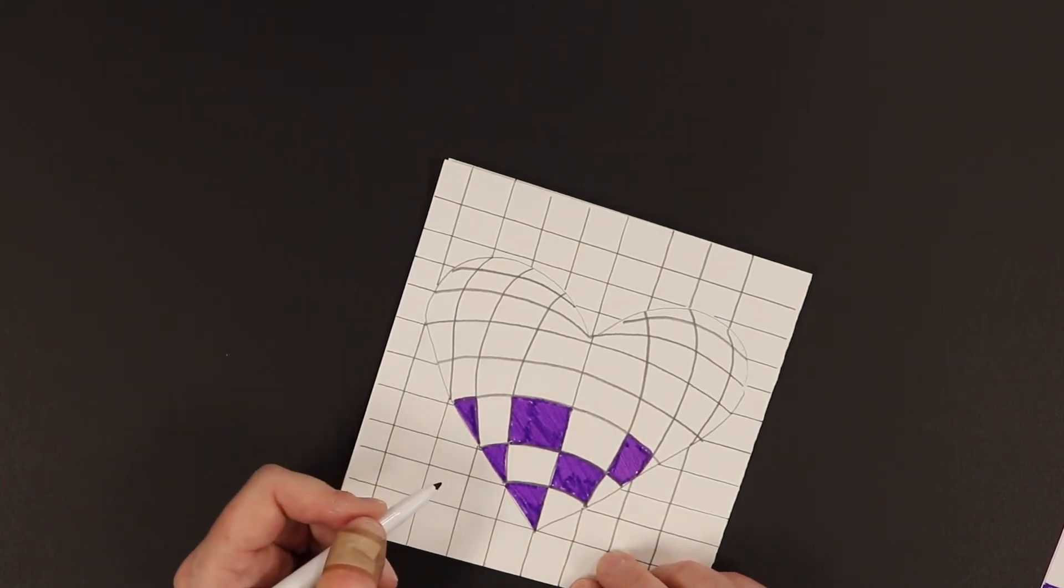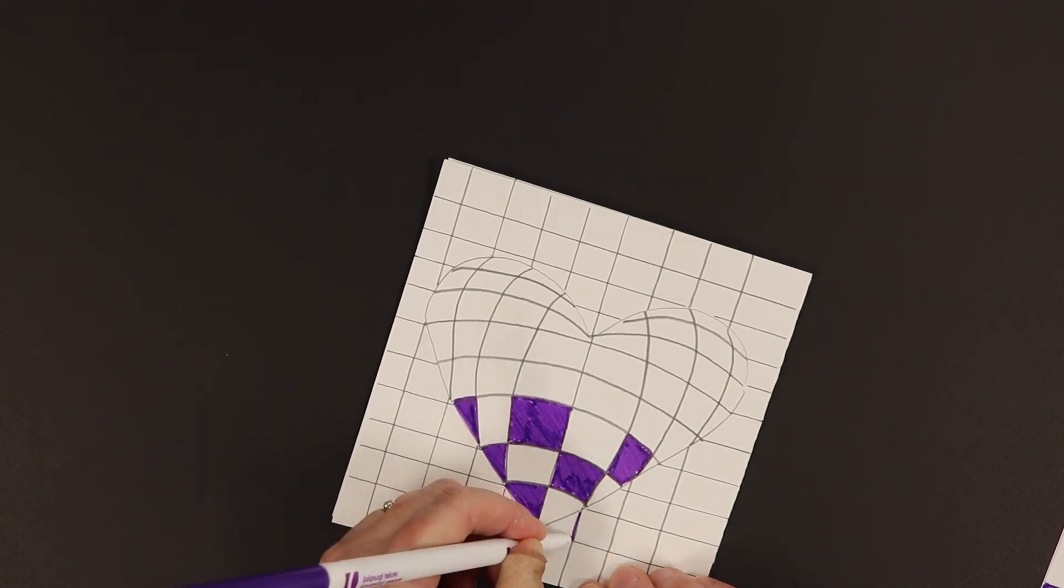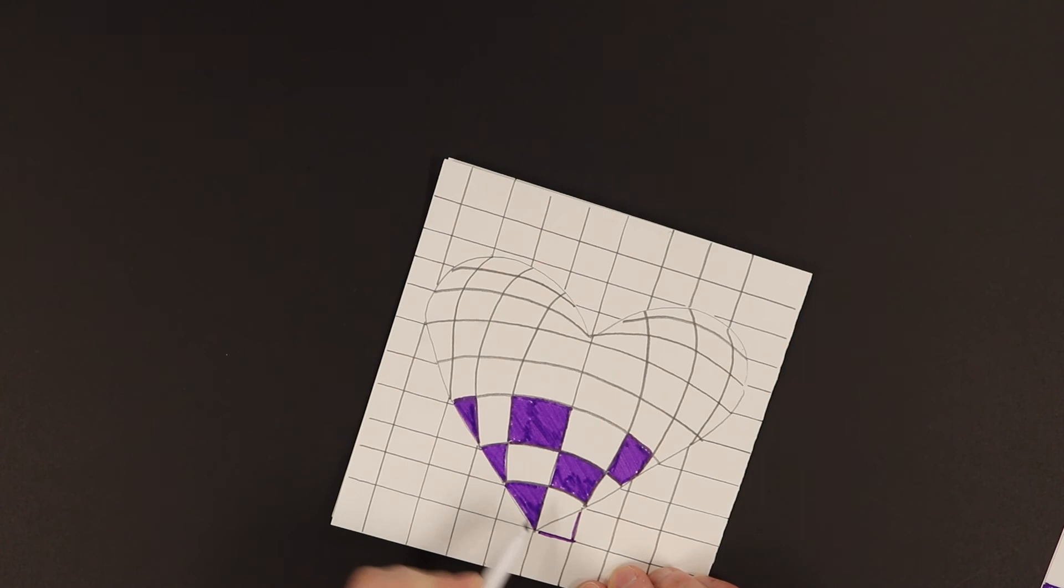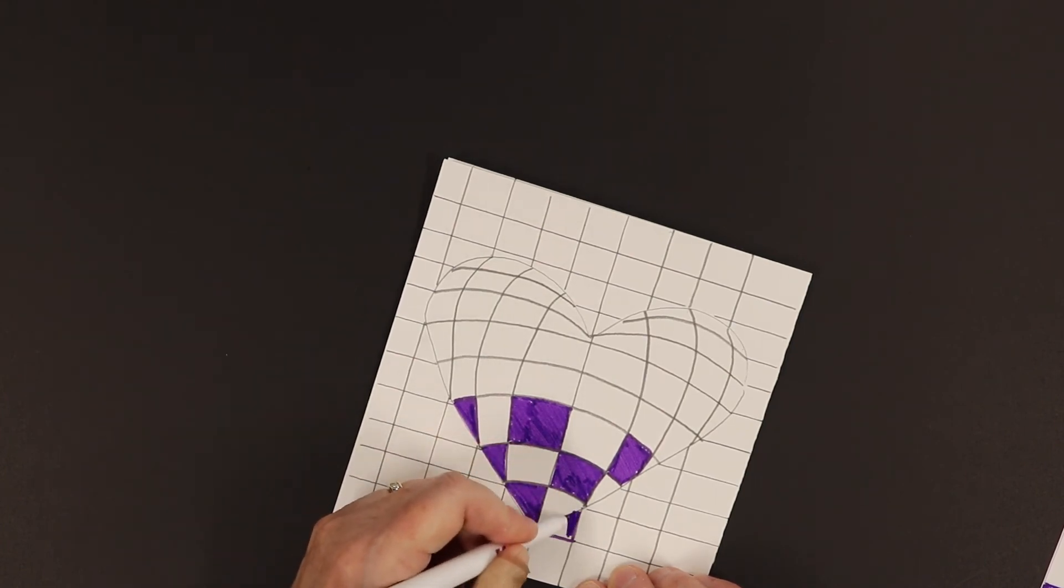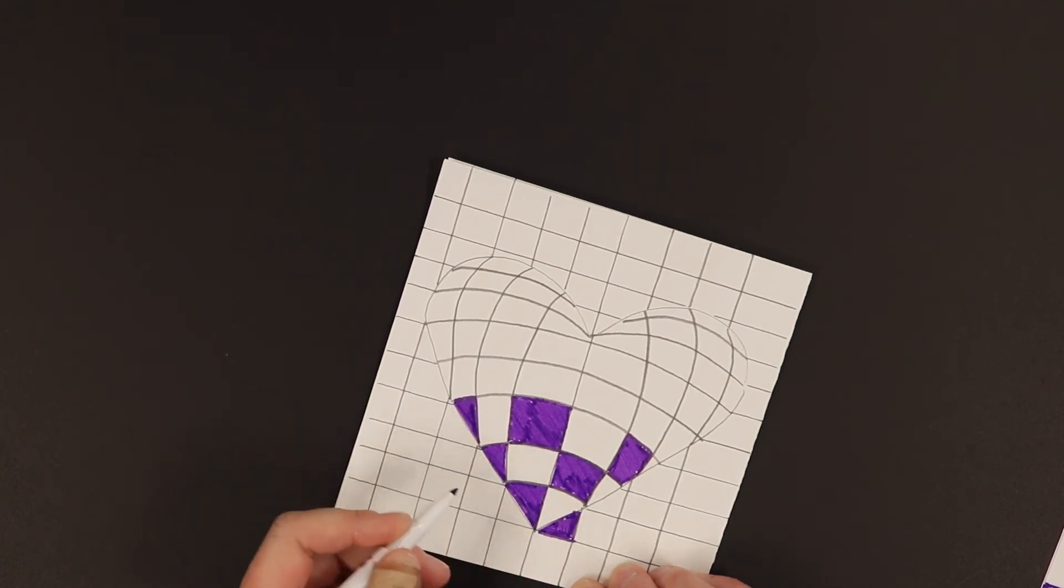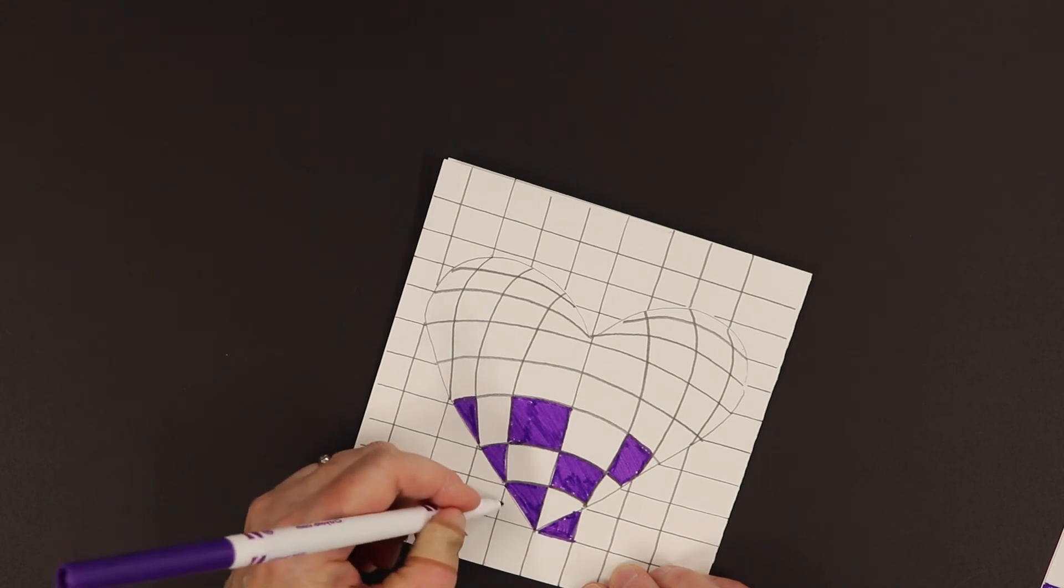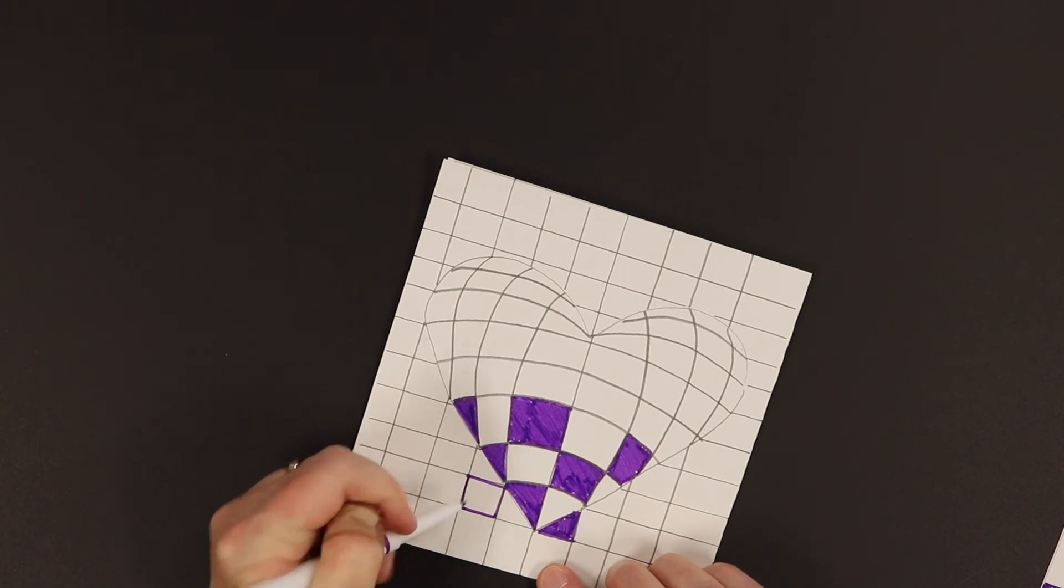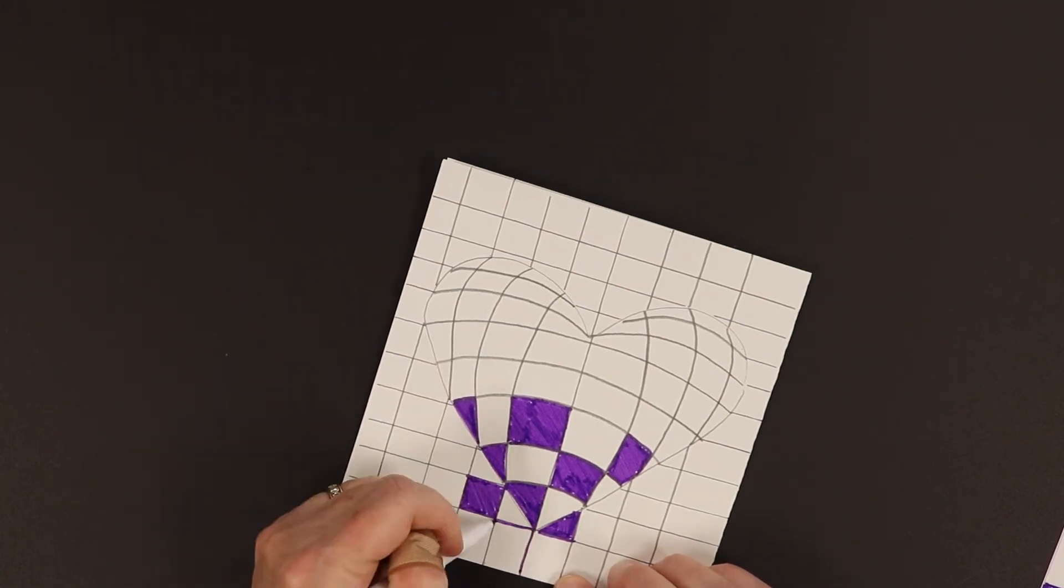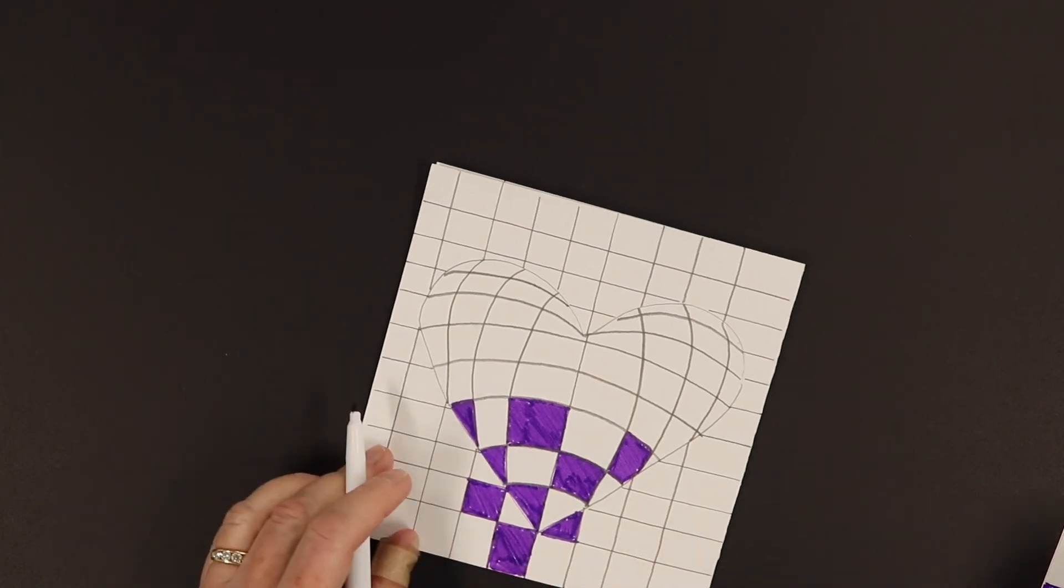Now when you get to the background, you're doing the same thing. You're going to do a checkerboard in the background. So I'm just going to do a little bit of the background. So I do this one. You can also choose a different color for the background.